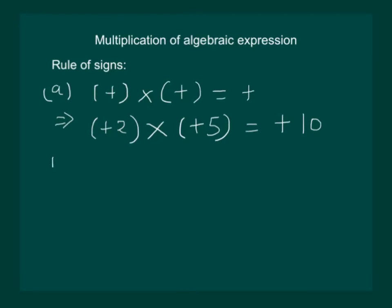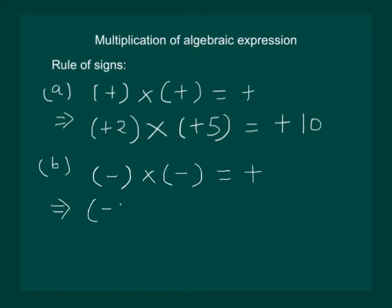Rule B: If we multiply two negative numbers, the product will be a positive number. This implies, if we multiply minus 2 with minus 5, the answer will be plus 10.